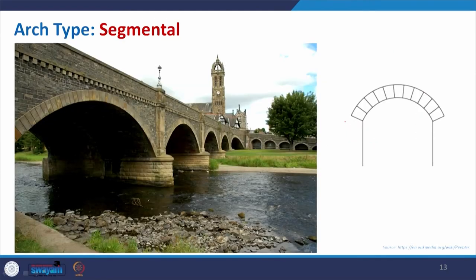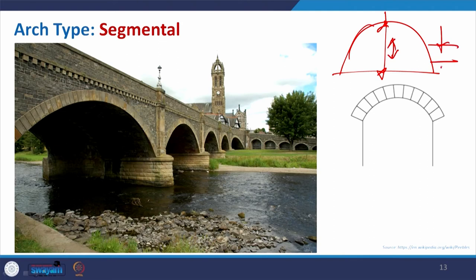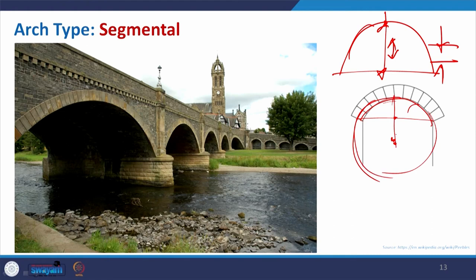Coming to the segmental arch: it is basically when you take a semicircular arch and reduce the rise of the arch on both sides — you squeeze it, and it creates a segment. In this case, the center of the arch shifts somewhat from the horizontal line to complete the form. The segmental arch is used where you need to decrease the rise of the arch, and this example shows a segmented arch in a particular bridge.